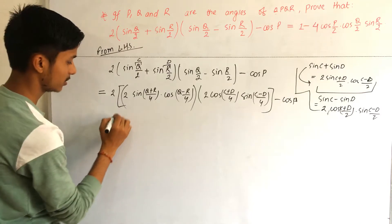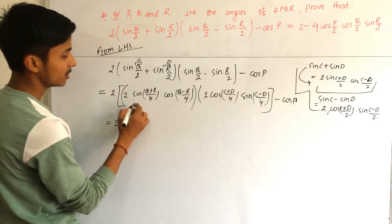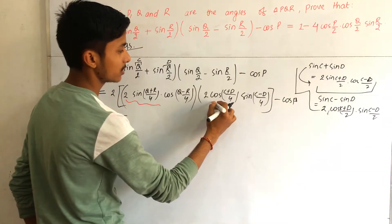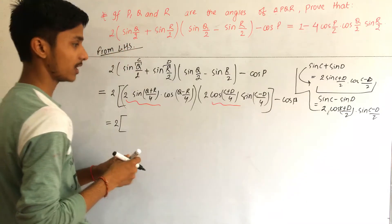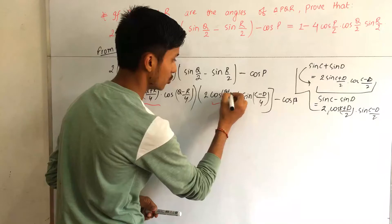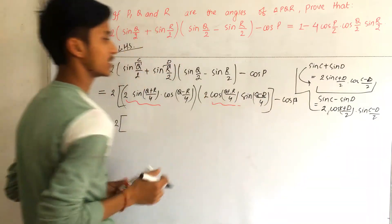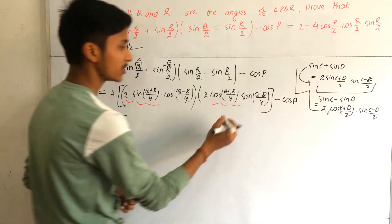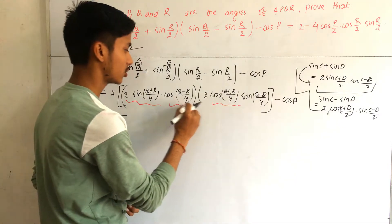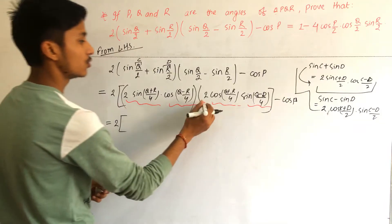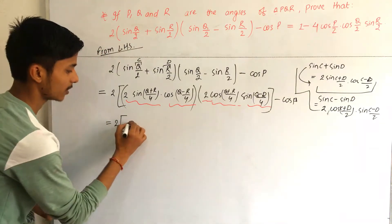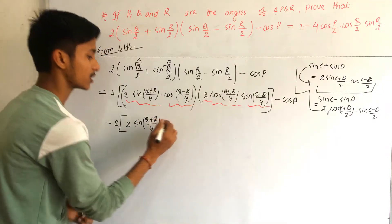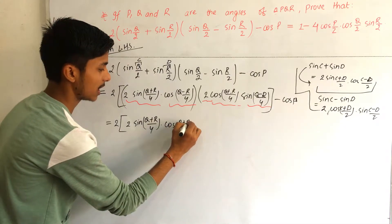In the next step, you can see here the matching terms: sin((Q+R)/4) and cos((Q+R)/4) share the same angle, and sin((Q-R)/4) and cos((Q-R)/4) share the same angle. So we rearrange and write: 2·sin((Q+R)/4)·cos((Q+R)/4), then bring in cos((Q-R)/4) and sin((Q-R)/4), minus cos P.